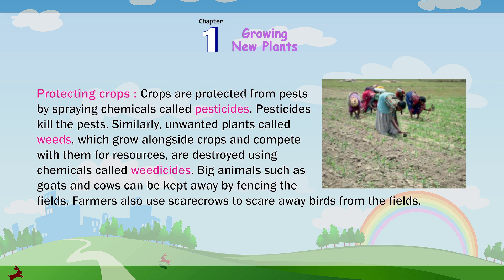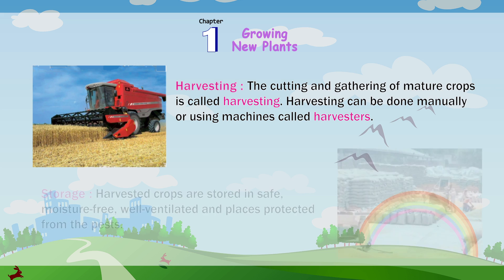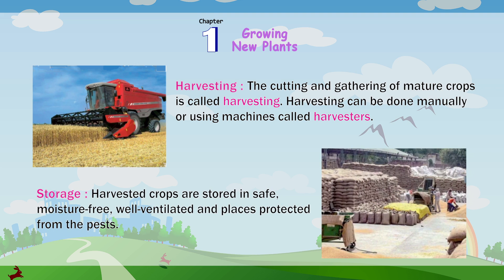Big animals such as goats and cows can be kept away by fencing the fields. Farmers also use scarecrows to scare away birds from the fields. Harvesting: The cutting and gathering of mature crops is called harvesting. Harvesting can be done manually or by using machines called harvesters. Storage: Harvested crops are stored in a safe, moisture-free, well-ventilated place protected from pests.